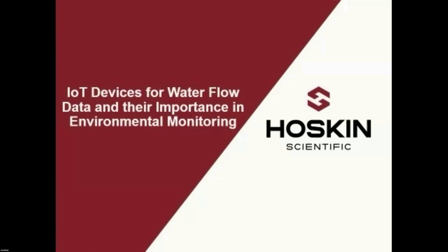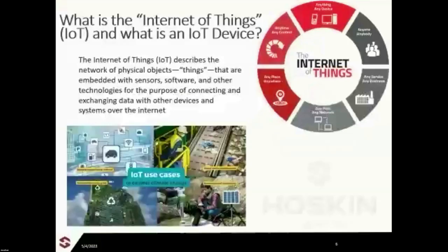So, IoT — I'm going to do one slide. What is an IoT device? The Internet of Things describes a network of physical objects or things that are embedded with sensors, software, and other technologies for the purpose of connecting and exchanging data with other devices and systems over the Internet.